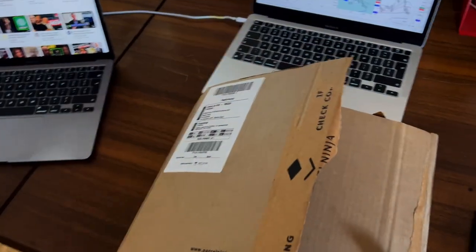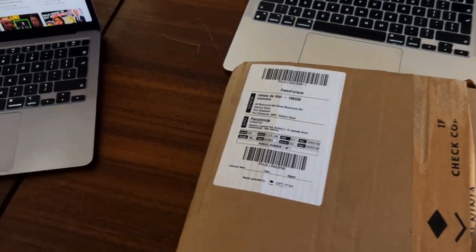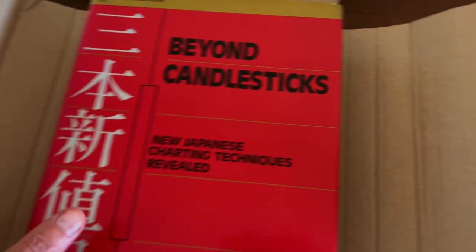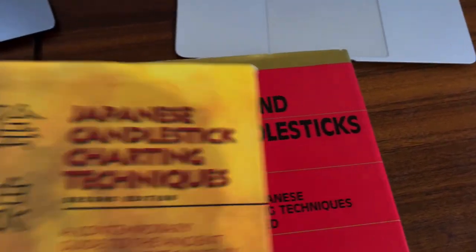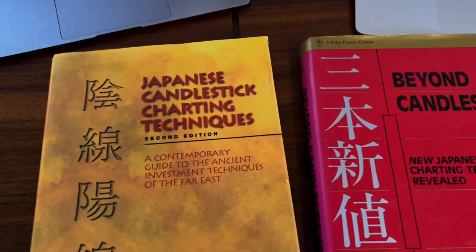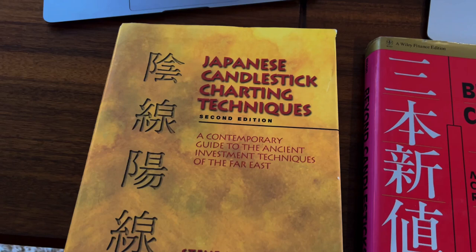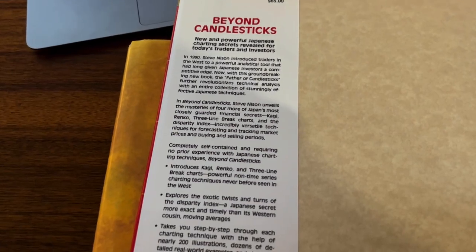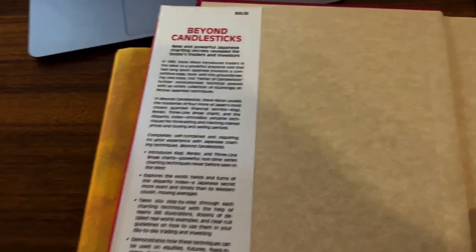So I've just received a delivery and these are the books that I ordered second-hand from the US. They are by Steve Nissen on Japanese candlestick charting techniques. I ordered them second-hand from Bookmore and they were written 20 years ago, I think 2001 thereabouts.